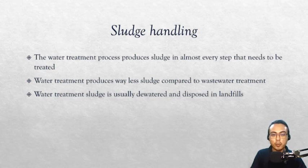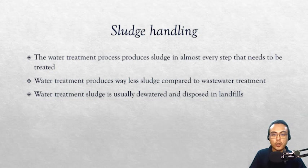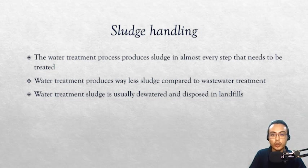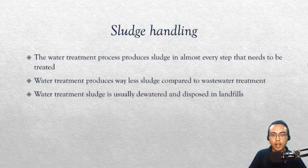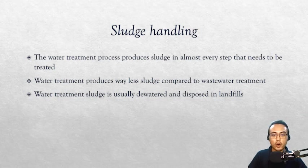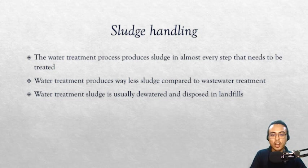Another integral part of the water treatment paradigm is sludge handling. Sludge is the collective term for solid waste of the process, including particles of varying sizes and coagulants used. Water treatment produces far less sludge compared to wastewater treatment, so sludge handling is normally not a problem — the sludge is simply dewatered by drying or filtration, and the dewatered sludge is disposed in landfills. After sludge handling, the treated water is distributed through pipelines. Now you know the tedious process of treating surface water to make it fit for human consumption.